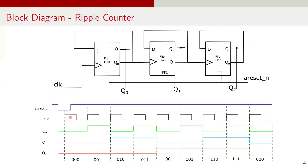At start, when the active-low asynchronous reset is low, all flip-flops are initially reset to 0, making Q0, Q1, Q2 all 0s. At the first clock pulse, FF0 toggles its state from 0 to 1 and the output becomes 001. In the second clock pulse, FF0 toggles from 1 to 0, and the falling edge of FF0 Q (the rising edge of FF0 QN) triggers FF1, toggling its state from 0 to 1, and the output is 010. On the third clock pulse, FF0 toggles again; FF1 remains the same because FF0 QN has a falling edge, and the output is 011.